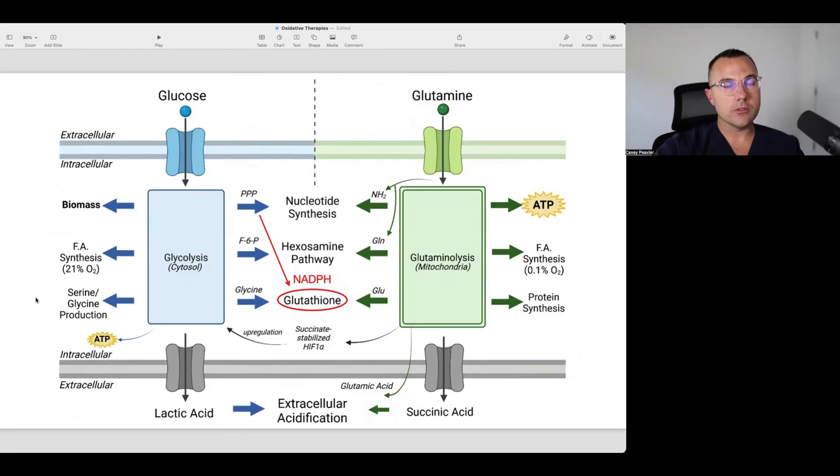This is a graphic published in a fairly recent paper from Dr. Seyfried's group in November 2024. It shows the importance of both glucose and glutamine as a way to maintain glutathione. We have glucose, which can contribute via the PPP to recycle NADPH, which allows glutathione to be recycled once it's being utilized as an antioxidant. The one thing I was mentioning is that glucose can also be converted into glycine, which is one of the three amino acids that make up glutathione.